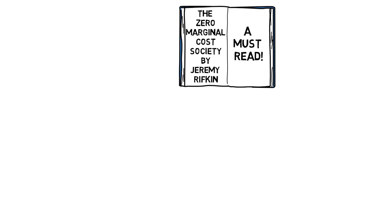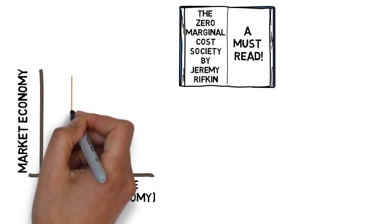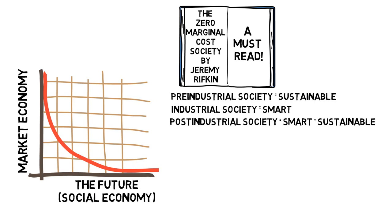Of course capitalism won't disappear overnight, rather the market will play an increasingly diminished role in a predominantly social economy. But the future of jobs or businesses will be nothing like what we have had until now. You know, if I had to sum up what I learned in this book in a sentence, it would be this: in the beginning we had a sustainable society, at present we have a smart one. In the future we'll have a society that is both smart and sustainable.